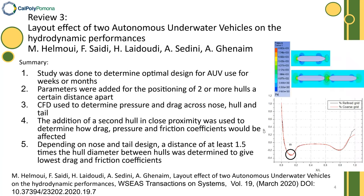The third review examines the layout effect of two autonomous underwater vehicles — specifically, a study of two hulls near each other to assess friction and pressure effects. It was shown that a distance of at least one and a half times the hull diameter between the two hulls gave the lowest drag and friction coefficients.